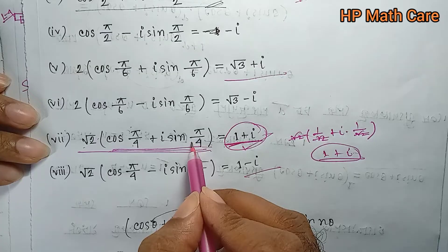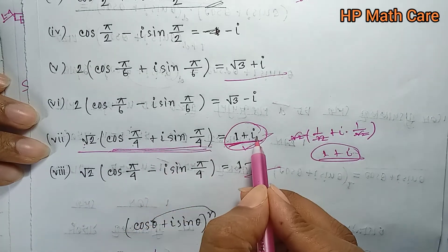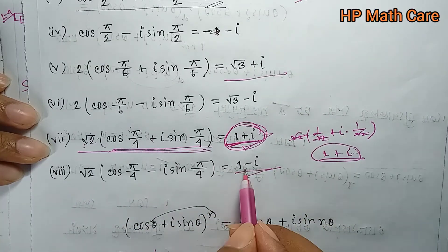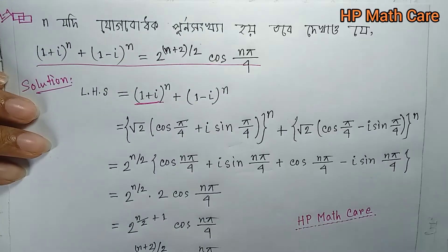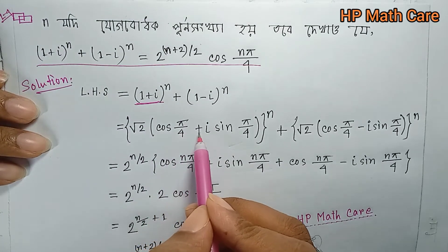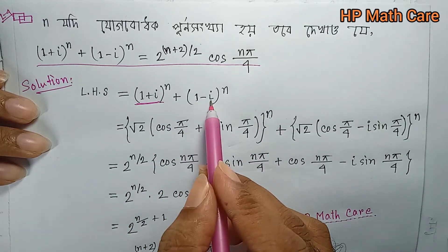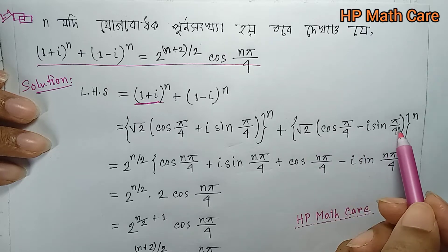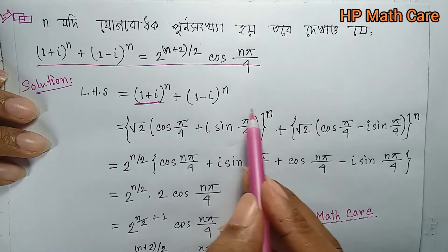45 degrees means one by root two, and root two times one by root two gives one. So I equals i. And for (1−i), we similarly get root two into cos(5π/4) minus i sin(5π/4) to the power n. So (1+i)^n = [root two into (cos(5π/4) + i sin(5π/4))]^n and (1−i)^n = [root two into (cos(5π/4) − i sin(5π/4))]^n.